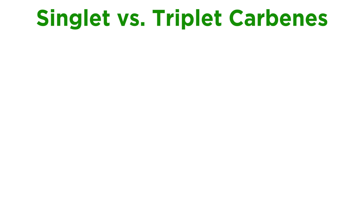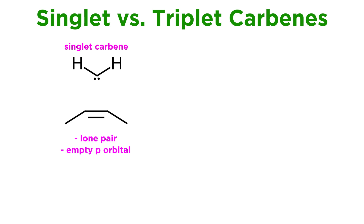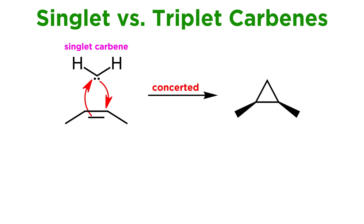We should note that singlet and triplet carbenes react in different ways. Because singlet carbenes have a lone pair and an empty p-orbital, they can act as traditional nucleophiles or electrophiles, though more typically the latter, and cyclopropanation with a singlet carbene is a concerted reaction.